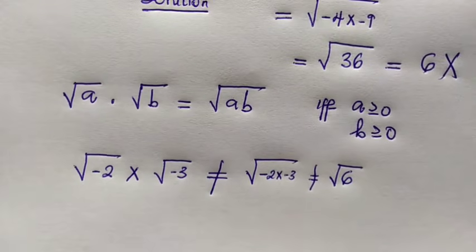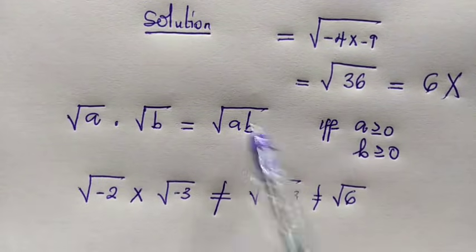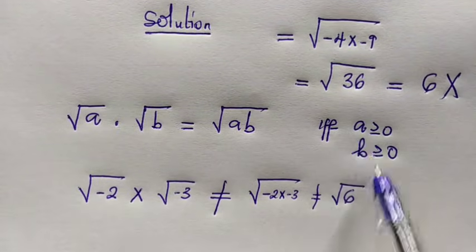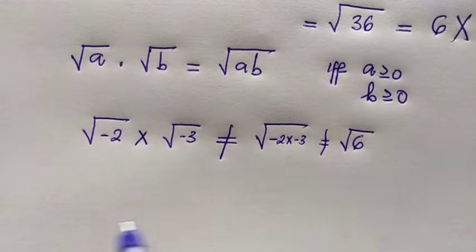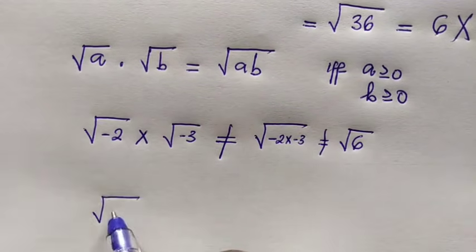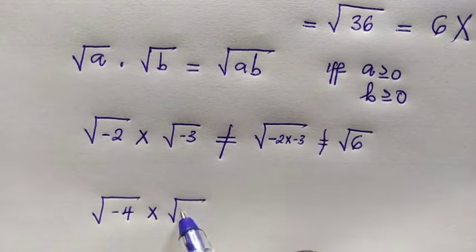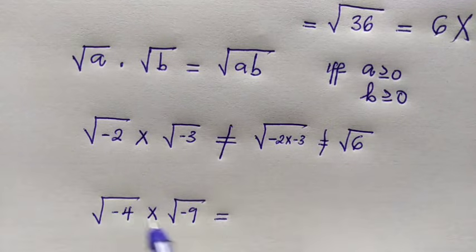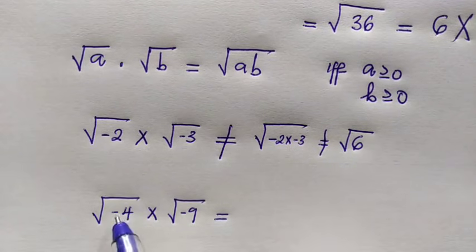Now, how do we solve this problem? Remember that this property holds when A and B are both greater than or equal to 0. So therefore, in our problem where we have square root of negative 4 times square root of negative 9, we're going to simplify this separately.